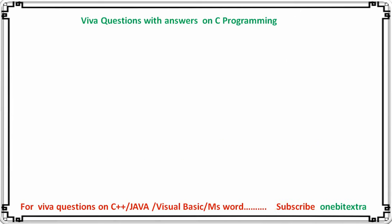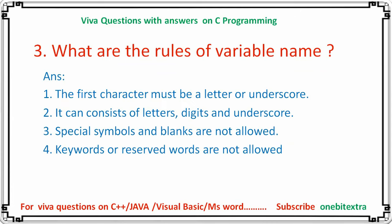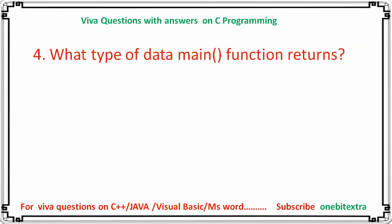Next question: what are the rules of variable names? The first character must be a letter or underscore. It can consist of letters, digits, and underscores. Special symbols and blanks are not allowed. Keywords and reserved words are not allowed in variable names.